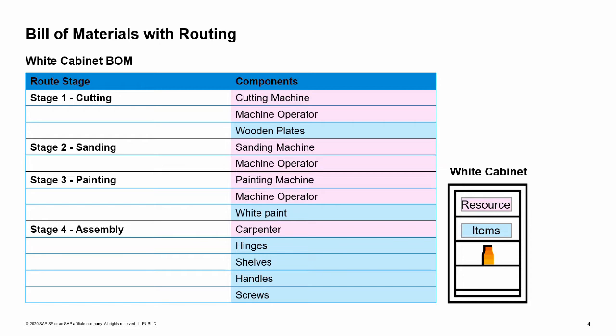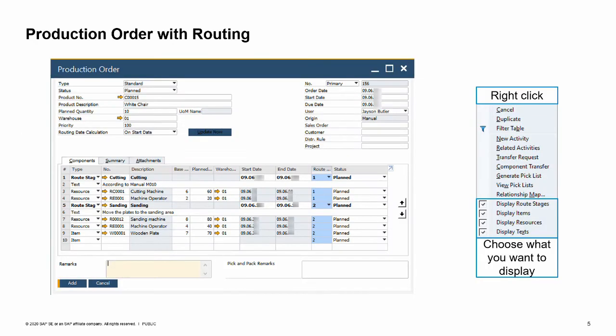This bill of materials is copied to the production order. As explained in the bill of materials topic, a bill of materials with routing consists of several stages where each stage groups a set of items and resources relevant for that stage. In the image, we see two of the stages. Beneath each stage, we can see the components related to that stage. This display can be adjusted from the context menu or from the go-to menu at the top of the screen.